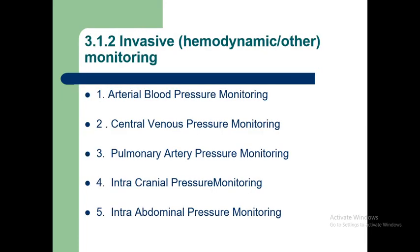Moving on to invasive hemodynamic monitoring methods. These include arterial blood pressure monitoring (A-line or arterial line), central venous pressure monitoring, pulmonary artery pressure monitoring, intracranial pressure monitoring, and intra-abdominal pressure monitoring. Non-invasive methods are not appropriate for measuring these pressures, so we use invasive methods for these.